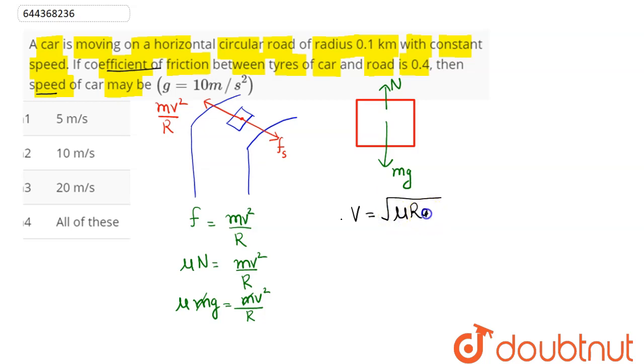substituting the values, we have here coefficient of friction μ as 0.4. Radius here is given as 0.1 kilometer, hence we can say 0.1 into 1000, that is 100 meter.